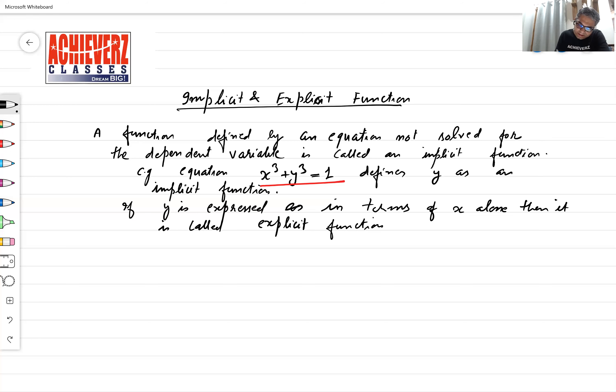Meaning, suppose you have y = x² + 5x + 7, something like this type of equation, then it will become explicit.